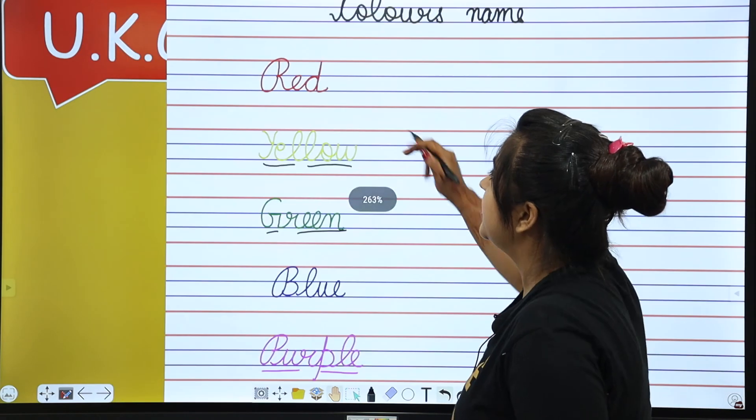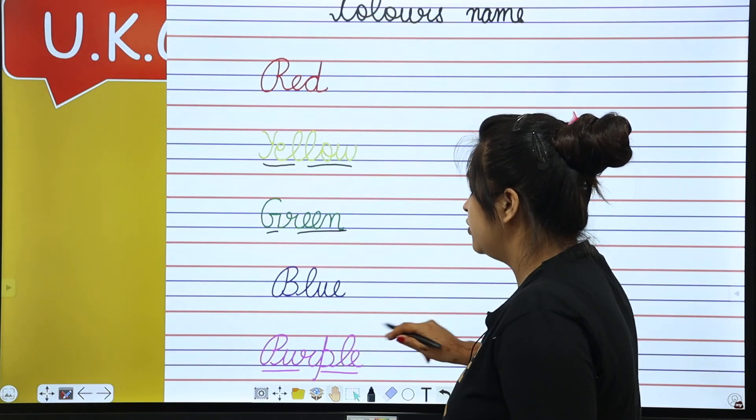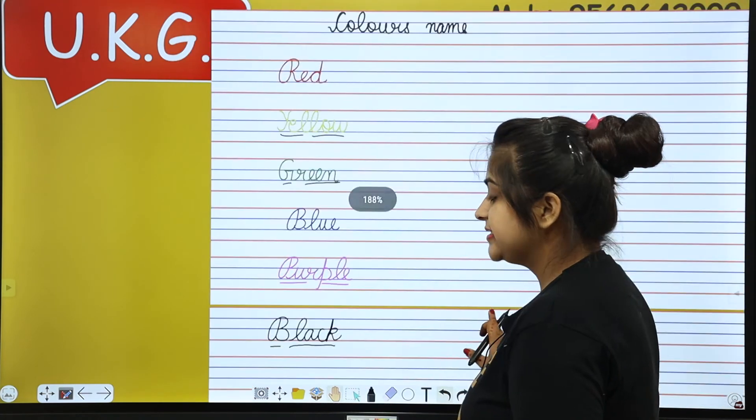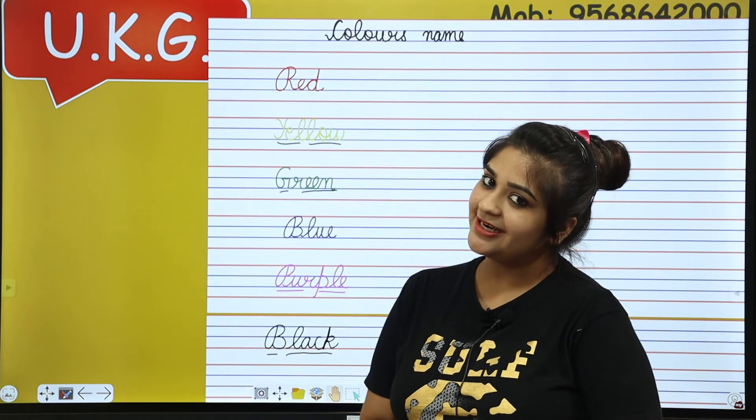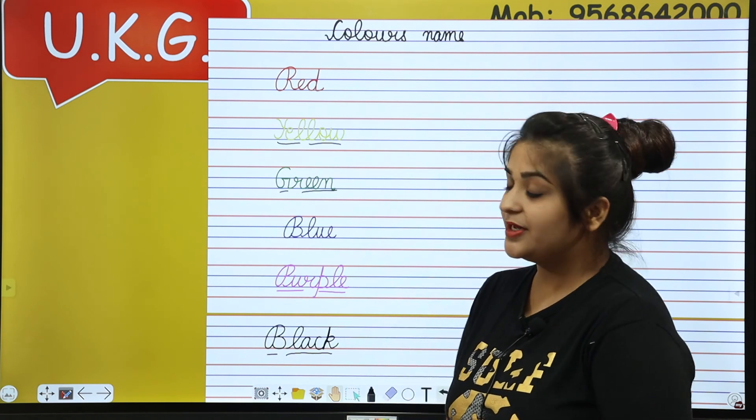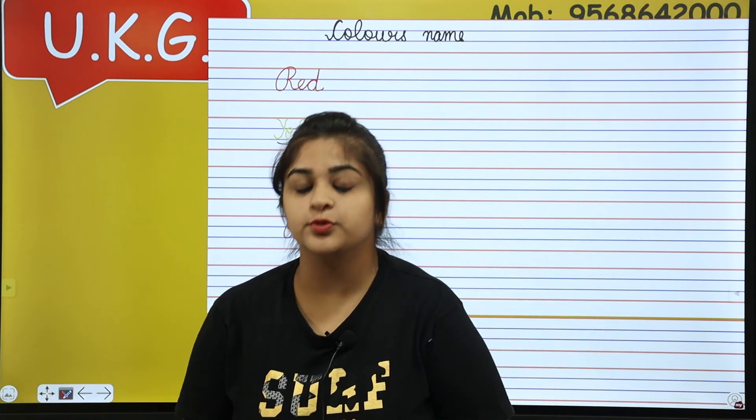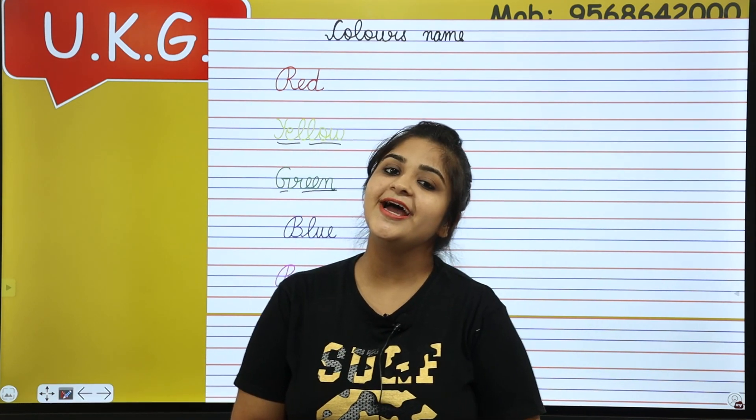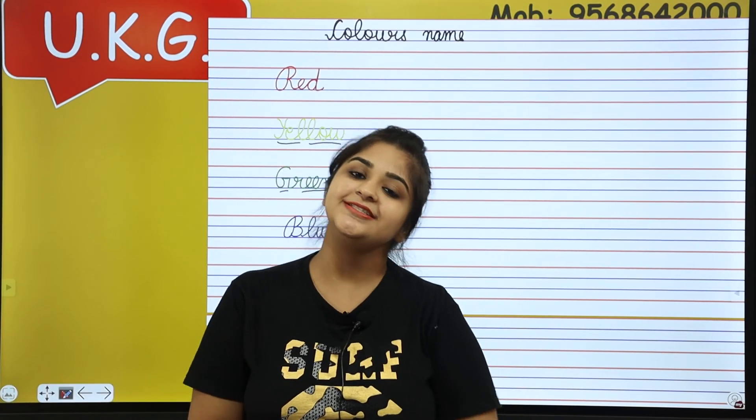So we have done one, two, three, four, five, six colors name. Okay? You also have to remember all of them with ma'am. Very good. Now you have to complete this in your English notebook and send the assignment to ma'am. Hope you all have understood. Thank you.